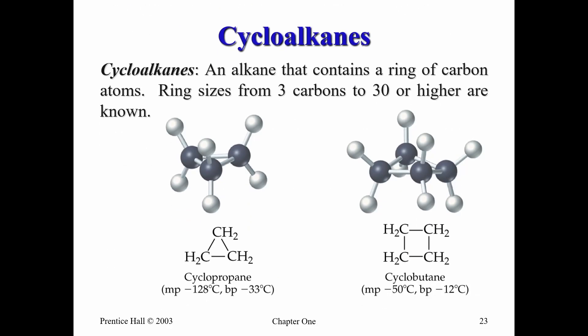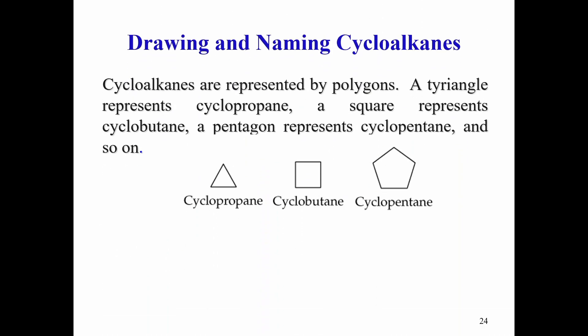Cycloalkanes are alkanes that are in a ring form. We can have cyclopropane, cyclobutane, cyclopentane, and others. Looking at their melting points, the more the ring size, the higher the melting and boiling point — just as we saw with aliphatic alkanes. The more the number of carbons in the ring, the higher the boiling and melting point. Cycloalkanes are simply represented as polygons representing the number of carbons in the compound, and named accordingly.